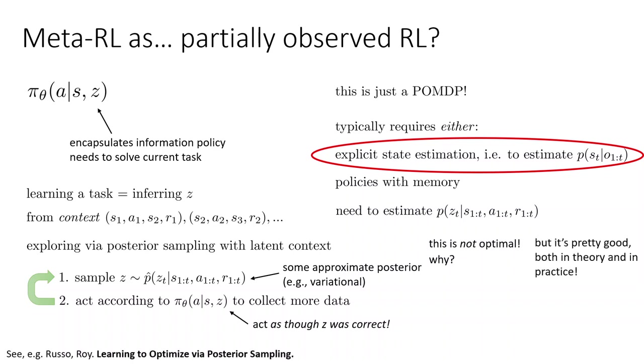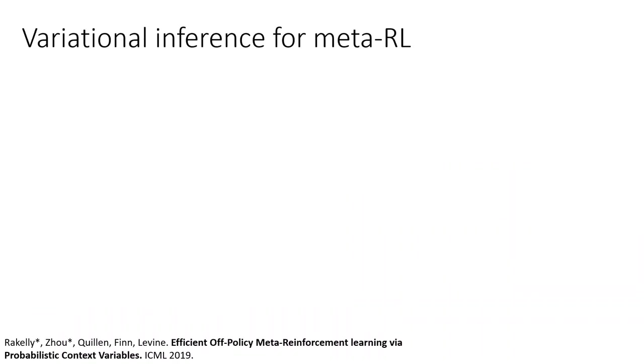But it is pretty good, both in theory and in practice. So we know that posterior sampling is a good exploration strategy. It turns out that in meta learning, it's not necessarily optimal. And I'll explain why shortly. But first, let's talk about an example of such a method, and that'll let us instantiate this a little bit more concretely.